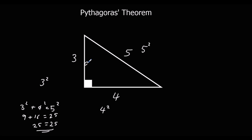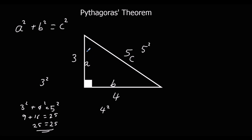Some people call the sides A, B, and C. So for any right-angled triangle, A squared plus B squared is equal to C squared — the two short ones squared add up to equal the long one squared.